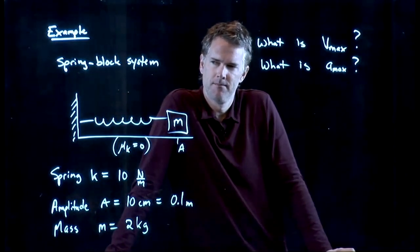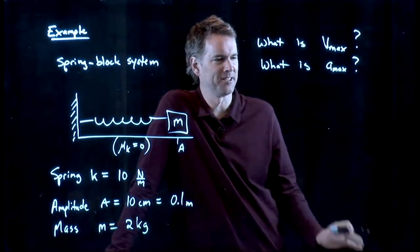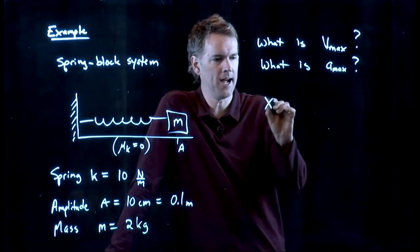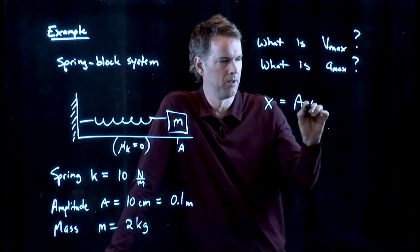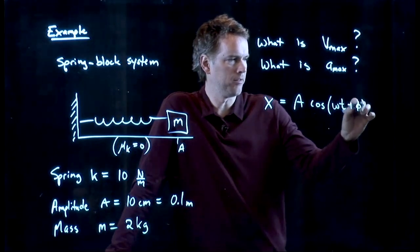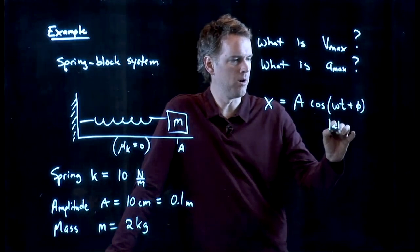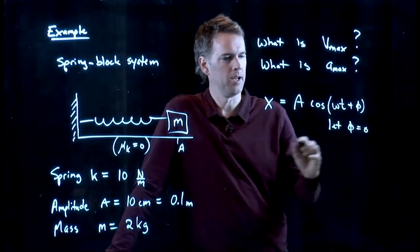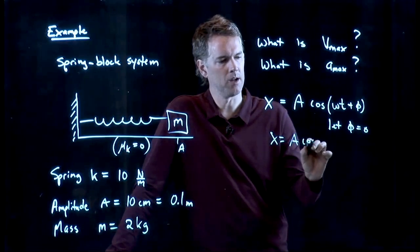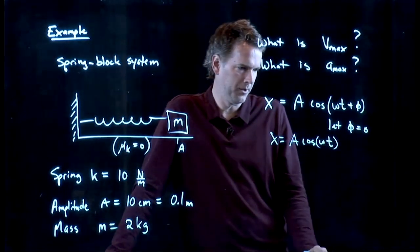Put the numbers into the equations. Which equations? The last one we looked at. Excellent. The last one we looked at was this. x equals A cosine omega t plus phi. And let's say that we're just going to let phi equal zero. And so this just becomes A cosine omega t. That looks pretty good.